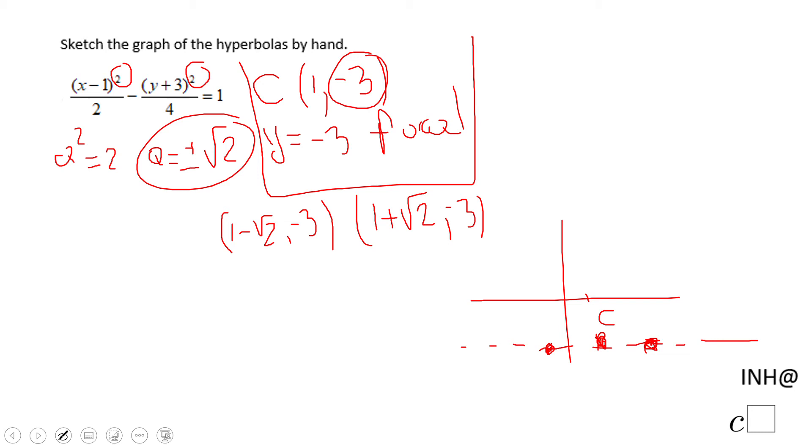For finding the asymptotes, which also allow us to do an accurate sketch of the hyperbola, we need to find b. And b² equals 4, so b will be square root of 4, plus and minus.